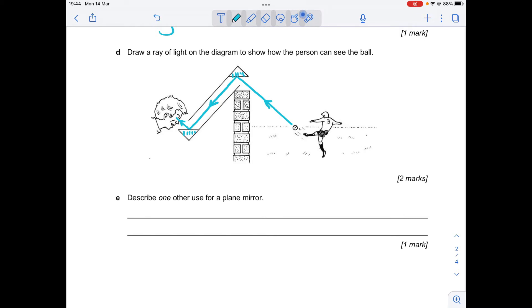So I'm going to get a diagram that looks like this. So in the mark scheme, it says a continuous line drawn from the ball to the eye, with angles of incidence and reflection drawn approximately equal at each mirror. So if we were to compare these angles, we would see that those angles are very similar.